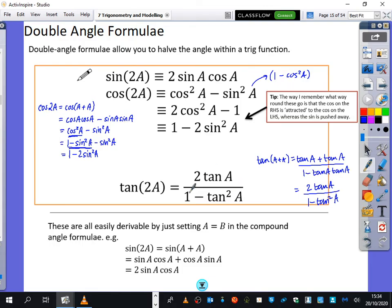So really these are just the same as before. Now the way I remember the cos ones is what I've got written in this red box. Is that the cos on the right-hand side that I have here and here, I almost think of it as being attracted to the cos on the left-hand side. So they're kind of like right next to each other here and here.